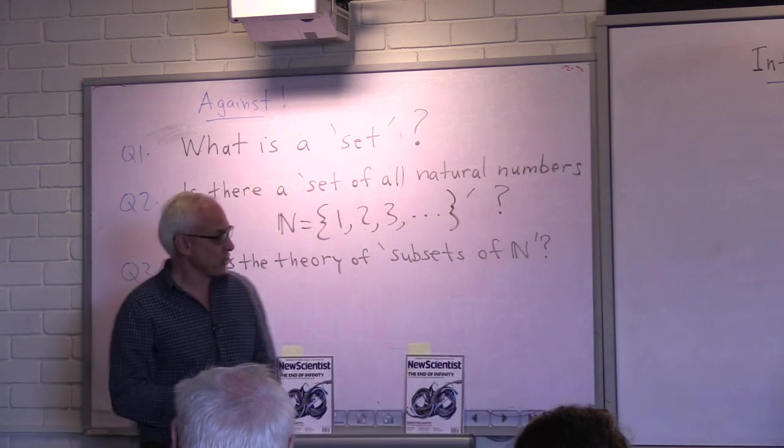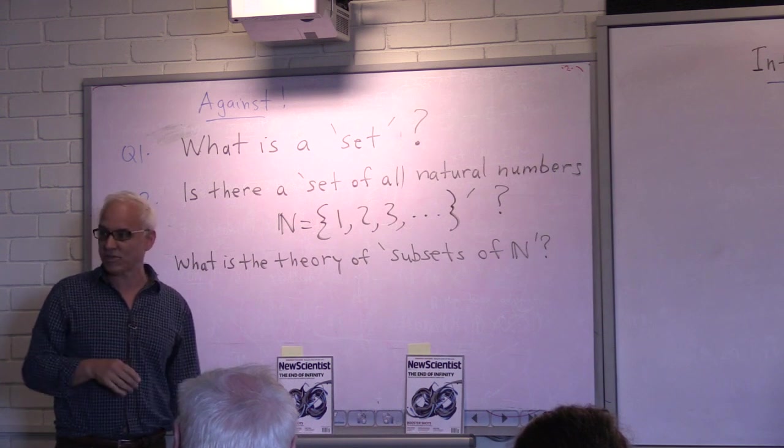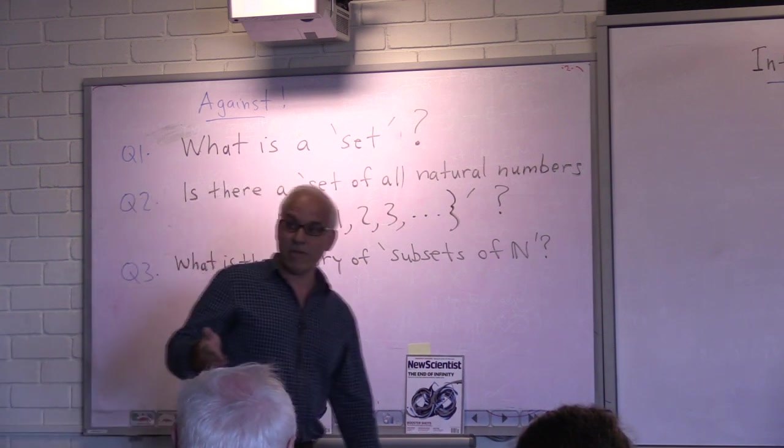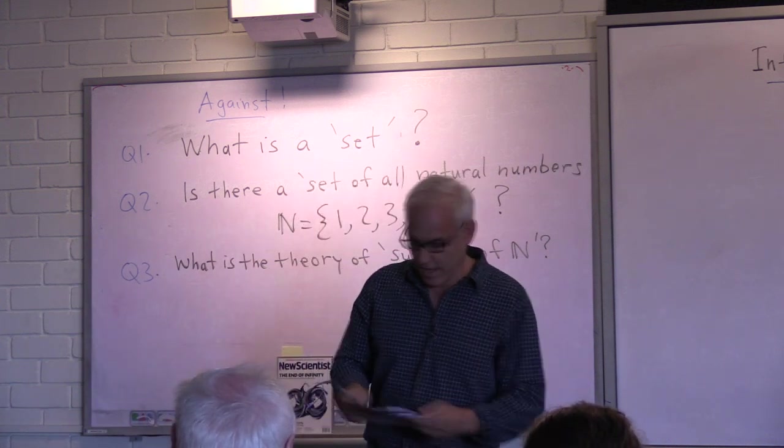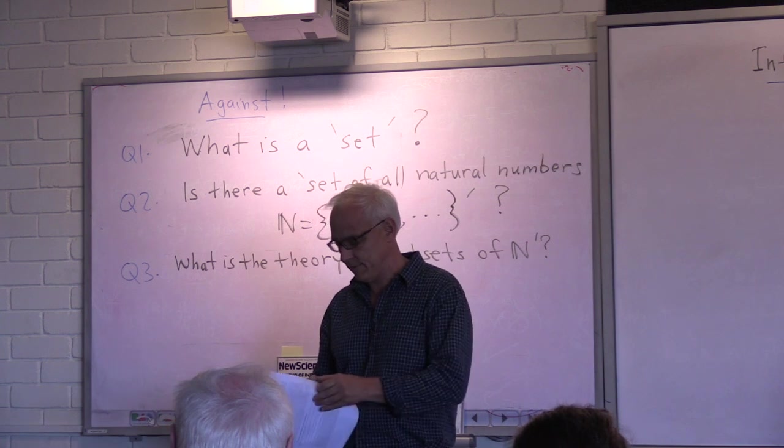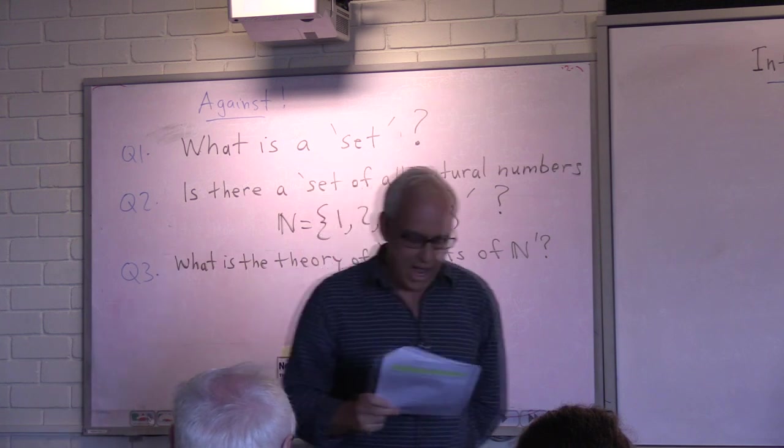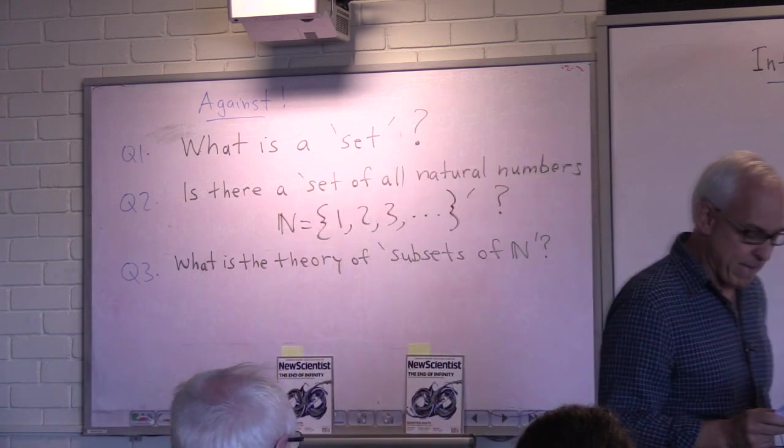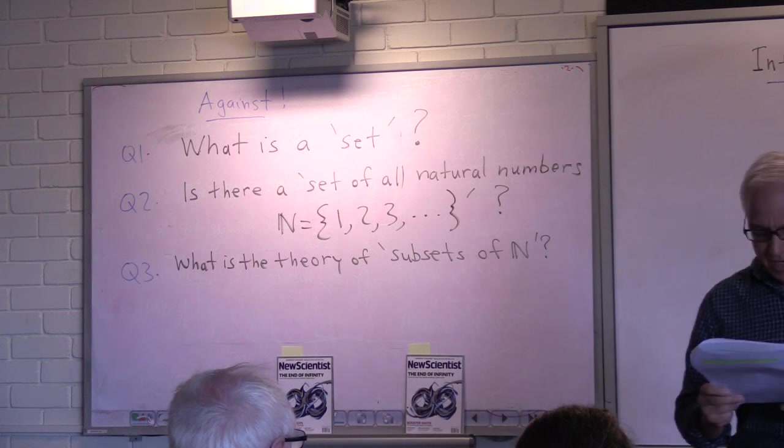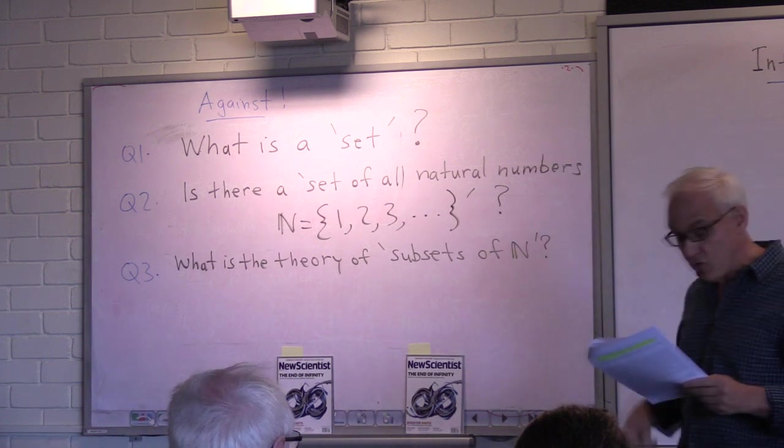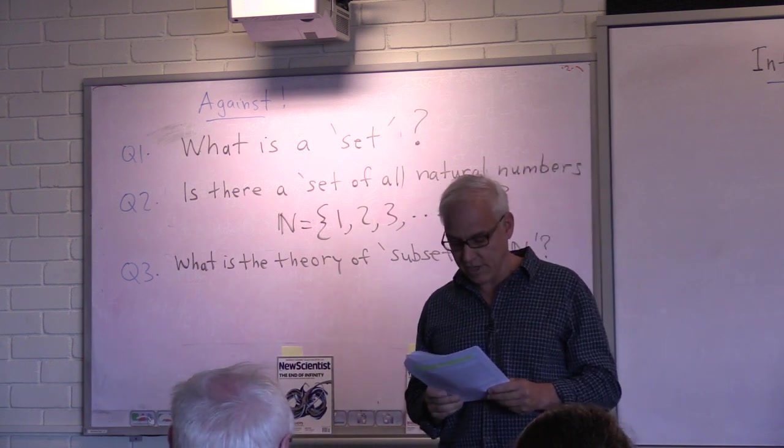These objections are not just mine. These objections were immediately laid on Cantor when he first started the theory. In fact, most prominent mathematicians at that time vigorously opposed Cantor. Gauss, before Cantor's time, said 'I protest against the use of infinite magnitude as something completed, which is never permissible in mathematics. Infinity is merely a way of speaking, the true meaning being a limit which certain ratios approach indefinitely close, while others are permitted to increase without restriction.'